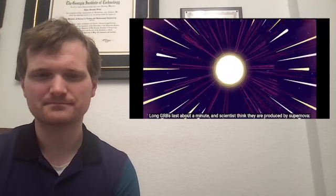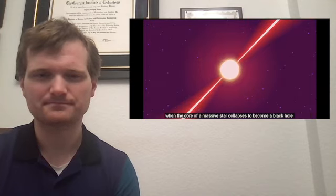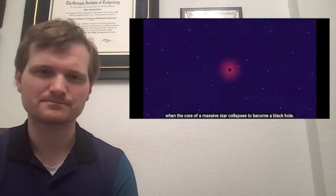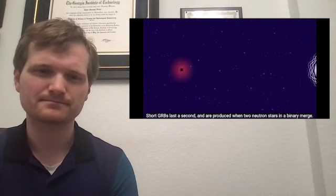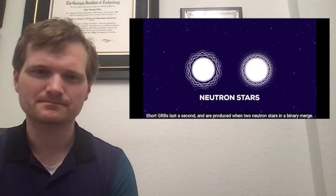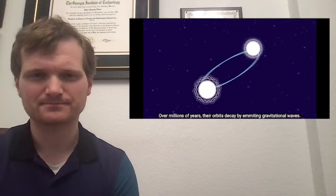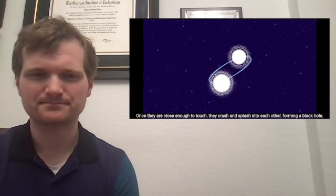Long GRBs last about a minute and scientists think they are produced by supernova, when the core of a massive star collapses to become a black hole. Short GRBs last a second and are produced when two neutron stars in a binary merge. Over millions of years, their orbits decay by emitting gravitational waves.